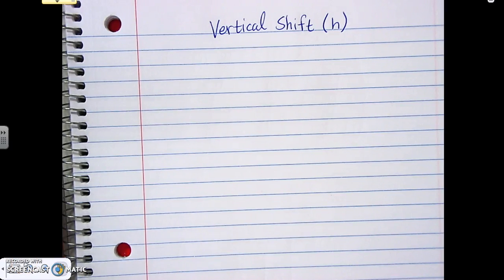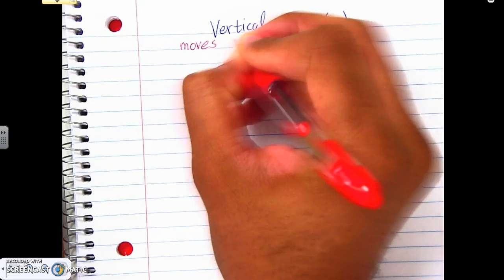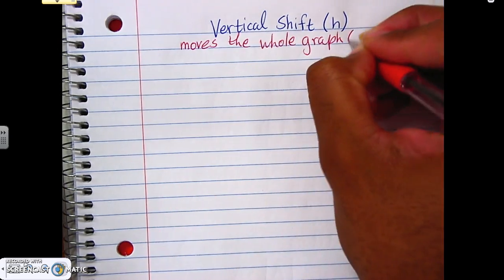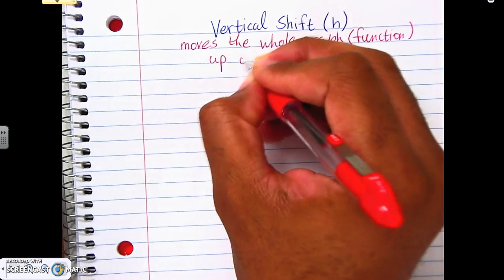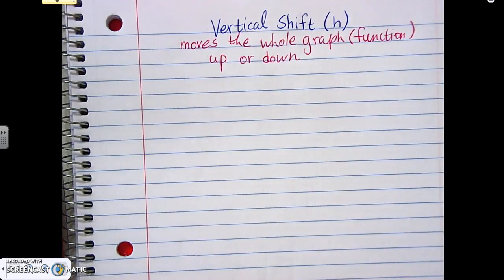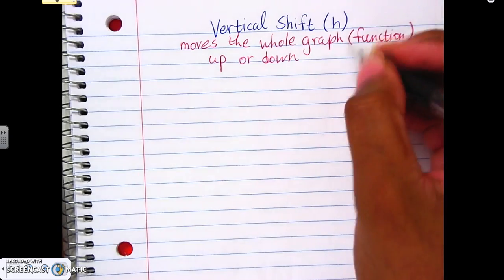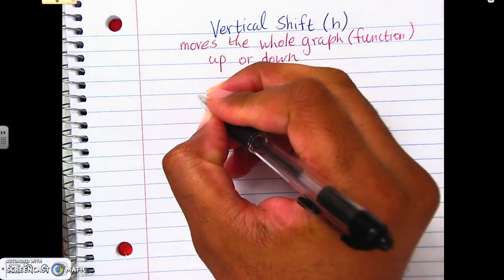Vertical shift is the second transformation — another easy one, just don't mix it up with amplitude. With vertical shift, the definition is that it moves the whole graph or function up or down. If you remember back when we did the regular transformations, that was the C on the back of the function. So here when we write this out again...